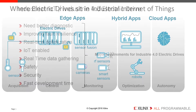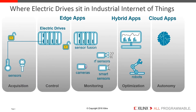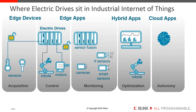Per the Industry 4.0 specification, electric drives sit in the control level. In other words, they are identified as an edge device that can be connected to the cloud directly or through another device. Edge devices typically operate on the factory floor. Often, one electric drive works cooperatively with other electric drives to automate machinery.